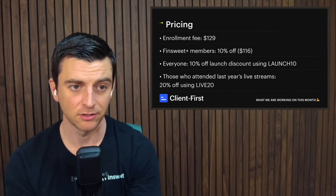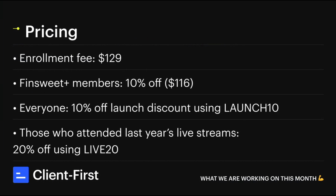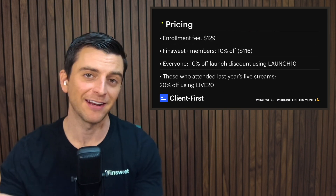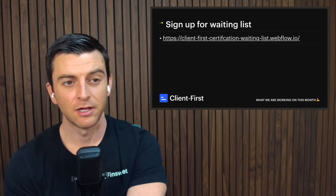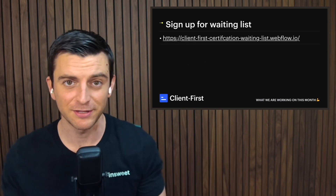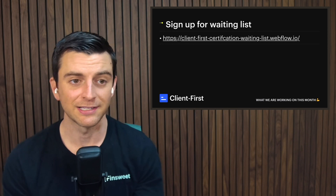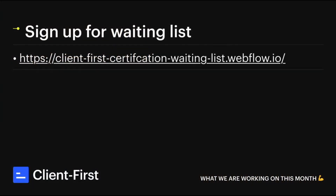Pricing: the enrollment fee is $129. Fin Suite Plus members get 10% off, bringing the base price to $116. On top of that, everybody gets a 10% launch discount using code LAUNCH10, and those who attended last year's live streams — dedicated long-term users — get 20% off using LIVE20. To be clear, you can't use LAUNCH10 and LIVE20 together; you use one or the other. The Fin Suite Plus benefit gets added on top of either of those discounts. Sign up for the waiting list at client-dash-first-dash-certification-dash-waiting-dash-list dot webflow dot io.